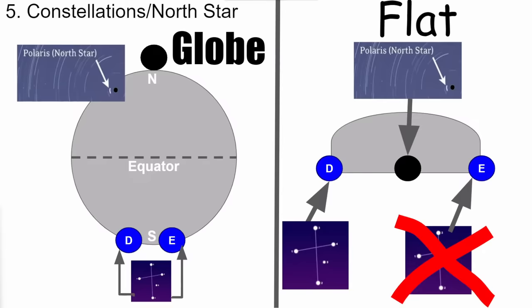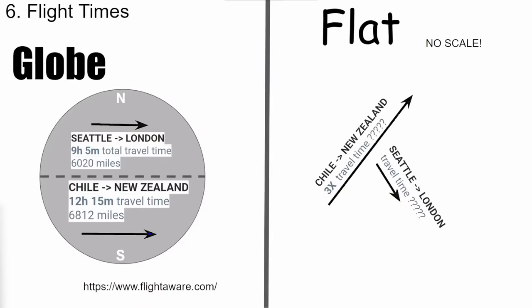On constellations and the North Star: both models predict you'd see Polaris at the North Pole. But at the South Pole, the globe predicts you'd see the Southern Cross at both point D and point E. On a flat Earth, you couldn't possibly see the Southern Cross at point E because it's on the opposite side. Flat Earth has no explanation for what you'd see there. In reality, we can see the Southern Cross at both points.